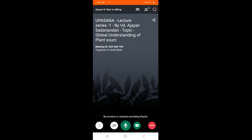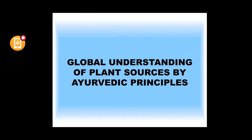Knowing about these approaches of the Rasa-Guna can help to identify the importance of plant sources available around the globe. We can see the aspects of the ways how our Acharyas studied this science through various principles. With your permission, we can start the topic: Global Understanding of Plant Sources by Ayurvedic Principles.